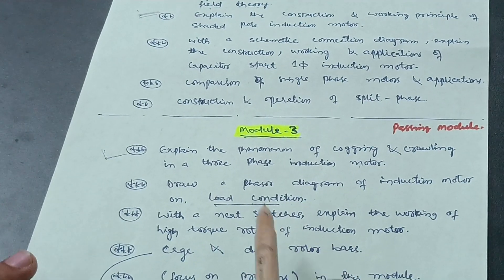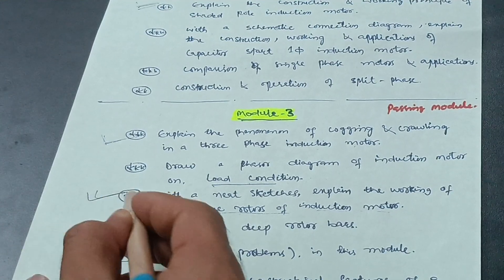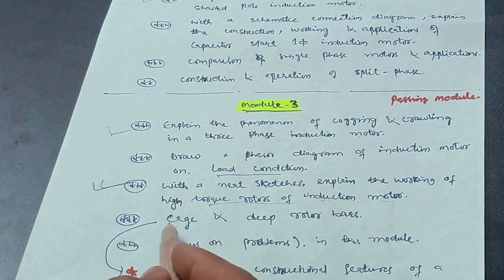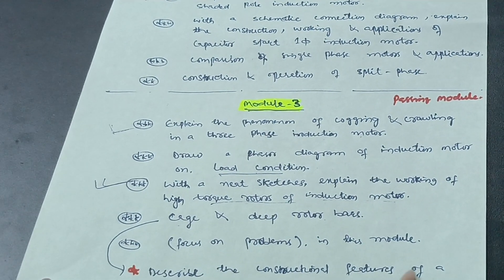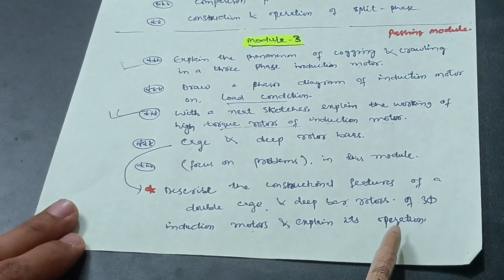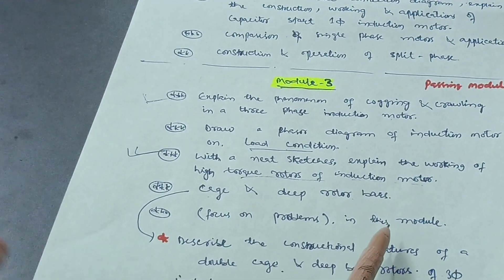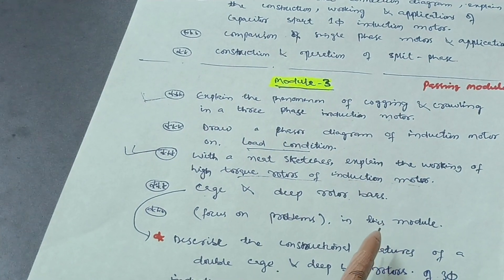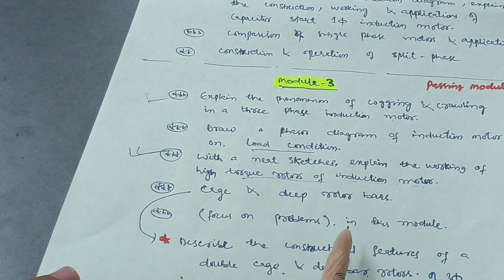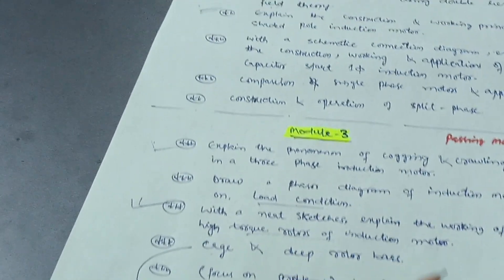With neat sketches, explain the working of high torque rotors of an induction motor — this is a super important question in this module. Also, describe the constructional features of double cage and deep bar rotors of three-phase induction motors and explain their operation. You should also focus on some numericals in this module. Even without the numerical part, you can get 10 to 12 marks by covering the theory questions.